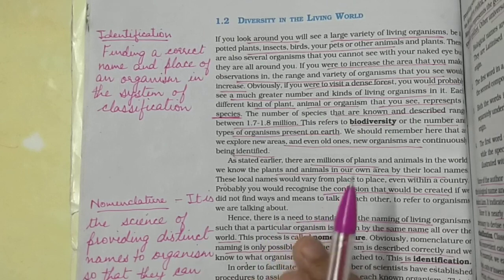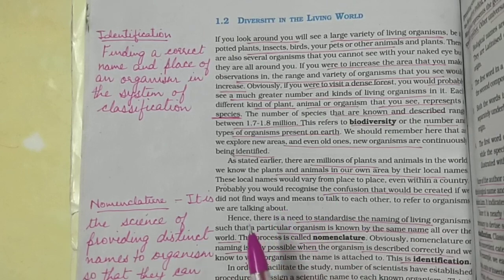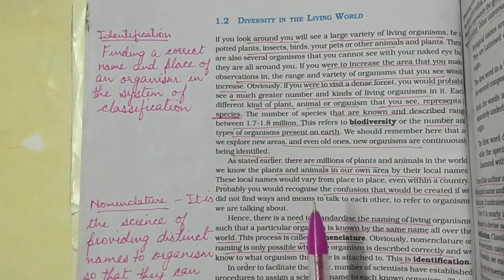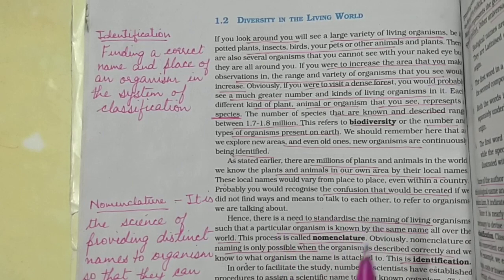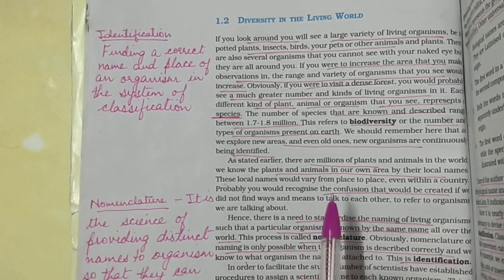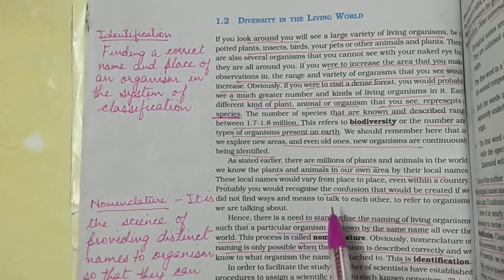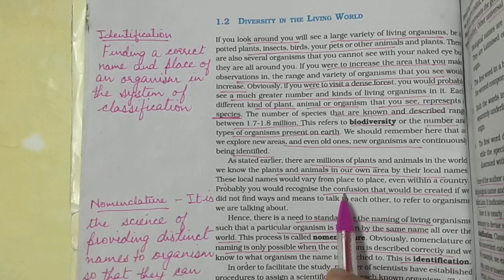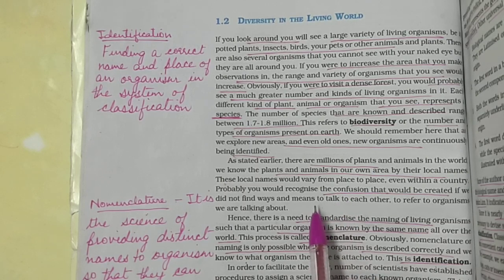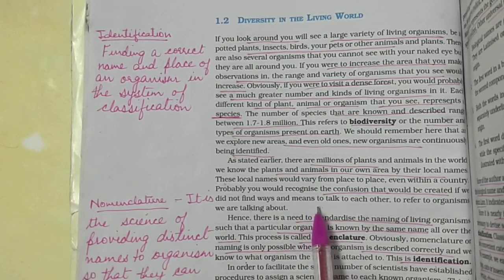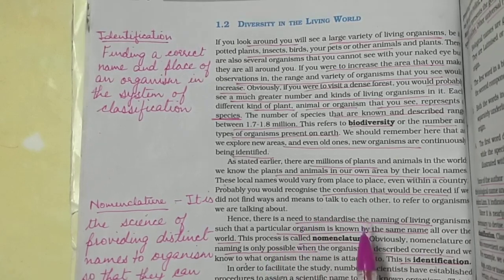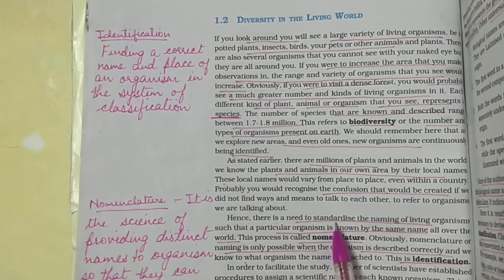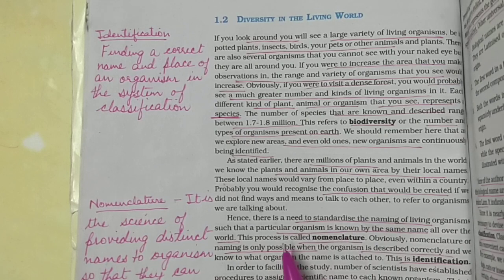Not only from country to country, but within a country also, local names are different. For example, a dog — we call it 'dog' in English, 'kutta' in Hindi, 'kukur' in Sanskrit — and in every language we call it by a different name, which can create a lot of confusion. We are talking about the same organism but we don't recognize it because we are calling it by a different name.